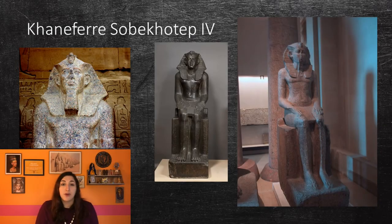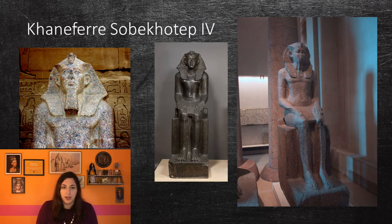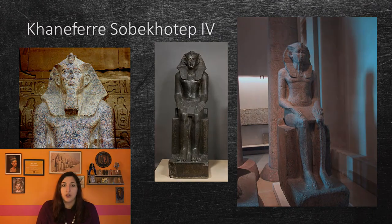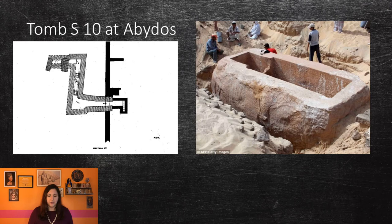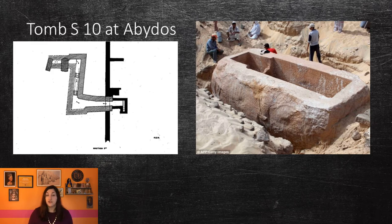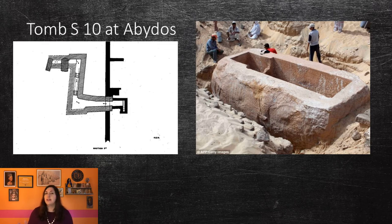Sobekhotep IV was most likely the brother of Neferhotep I, meaning that he came from a non-royal family. He may have reigned for about eight years and probably conducted building work in Abydos and Karnak, and also conducted an expedition to the amethyst mines at Wadi el-Hudi. It is believed that he ruled over Memphis, Middle Egypt, and Thebes, but not over Upper Egypt. Tomb S10 in Abydos was originally attributed to Sobekhotep I, but is now believed to be that of Sobekhotep IV because of the style of the tomb. The complex had a rectangular brick-walled structure, possibly in the shape of a mastaba or pyramid, with limestone paved corridors leading to the burial chamber. The red quartzite sarcophagus was found in a later royal tomb nearby called CS6, and planks from the cedar coffin in S10 were used by a later king named Seneb-Kai in a neighboring tomb CS9, with remnants of the coffin texts.